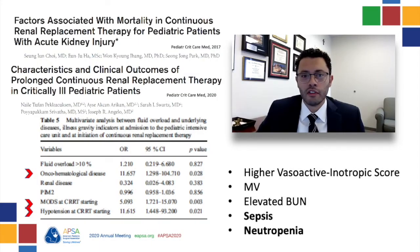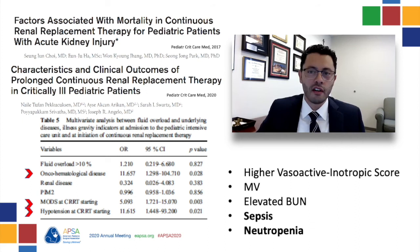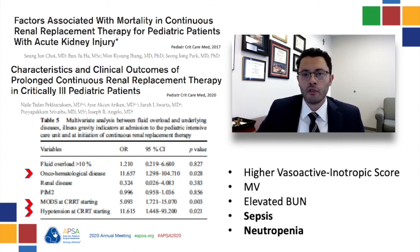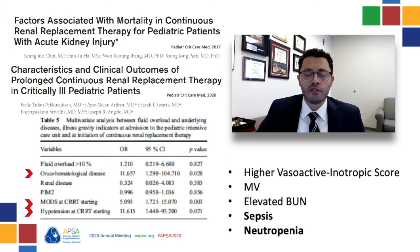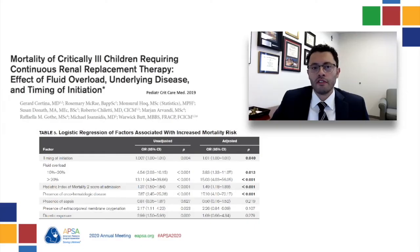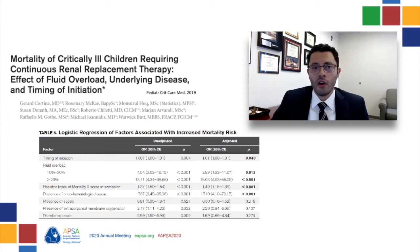A few recent studies have looked at what factors are associated with mortality in patients who require CRRT. Some factors associated with worse outcomes are patients who require vasopressors, are on mechanical ventilation, or have an elevated BUN. Sepsis and neutropenia have been strongly associated with worse outcomes. This recent study from Australia found that the degree of fluid overload, the presence of a hematologic disease, or a higher Pediatric Index of Mortality 2 score were strongly associated with increased mortality.